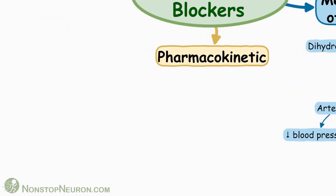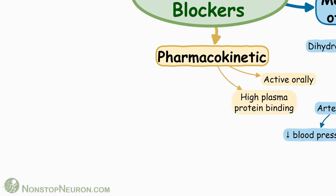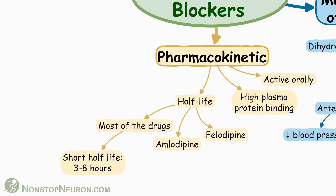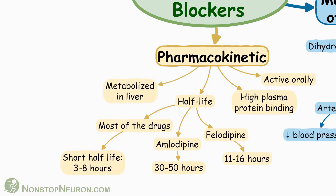Now let's see pharmacokinetics. They are all active orally and have high plasma protein binding. Talking about plasma half-life, most drugs have a short half-life ranging from 3 to 8 hours. Among longer-acting calcium channel blockers are amlodipine and felodipine — half-life of amlodipine is 30 to 50 hours, and that of felodipine is 11 to 16 hours. They are extensively metabolized in the liver.